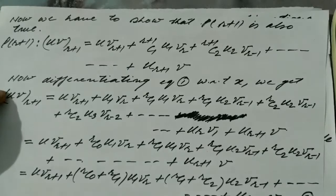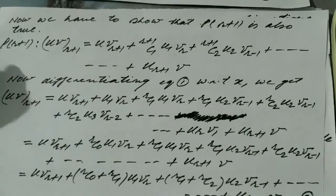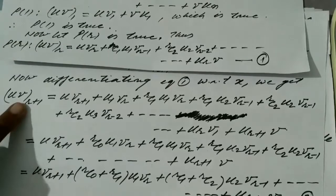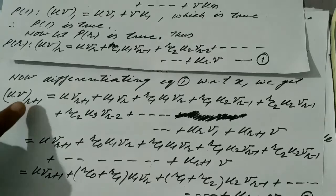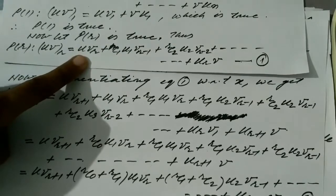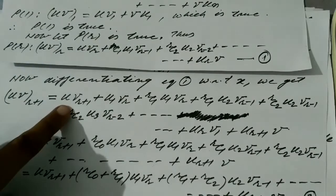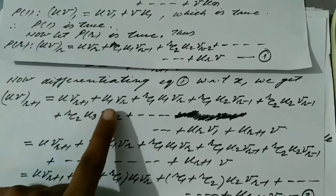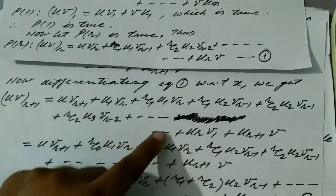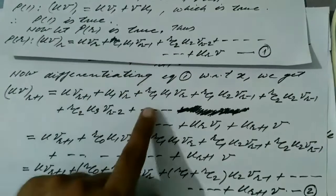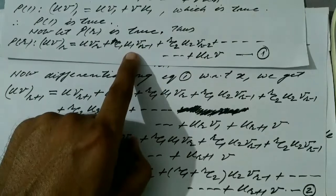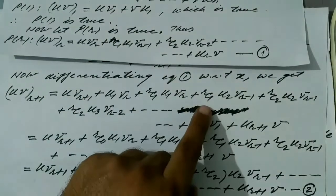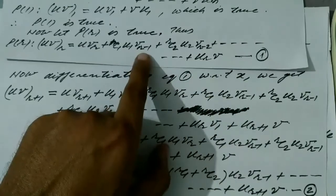In order to prove P(r+1) is true, we differentiate equation number 1. Differentiating, the left hand side gives (uv)_{r+1}. On the right hand side, the first term u·v_r is differentiated by the product rule: u as it is times v_{r+1}, plus u1 times v_r. The next term rC1·u1·v_{r-1} gives rC1 times (u1·v_r + u2·v_{r-1}), since rC1 is a constant coefficient.